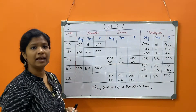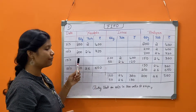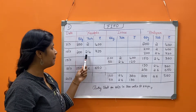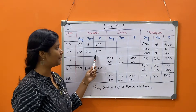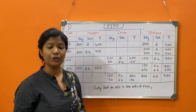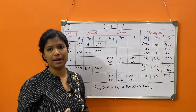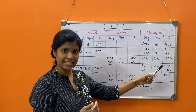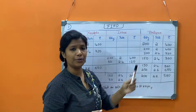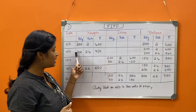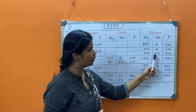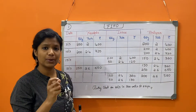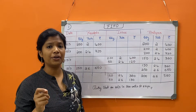The next transaction is 10th March — again, goods received: 200 units at rate 2.4. 200 multiplied by 2.4 gives 720 rupees. When writing the balance, always consider the previous day's balance. Carry forward 200 at rate 2, value 400 rupees, then add today's receipt: 200 units at rate 2.4, value 720 rupees.